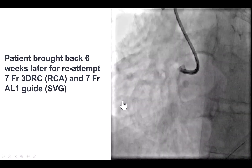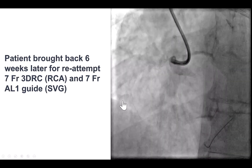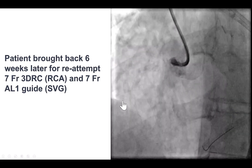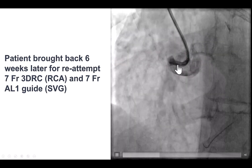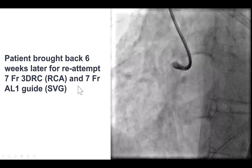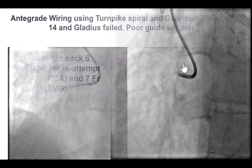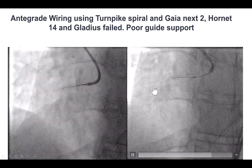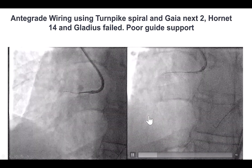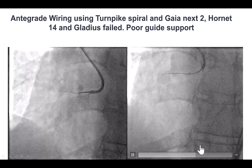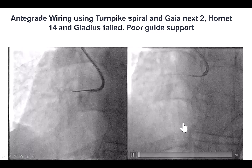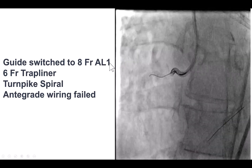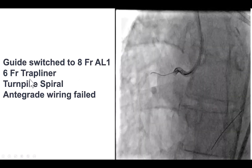The patient was sent home to recover and came back six weeks later for a repeat attempt to recanalize the RCA. We used large guide catheters and tried a 3DRC guide catheter to get better engagement of the RCA, but had similar issues with support. We knew in this case that we had to go antegrade — retrograde was not an option because we had jailed the distal cap with the papyrus stent. Eventually we switched back to an 8 French AL1 guide and also used a 6 French guide extension.